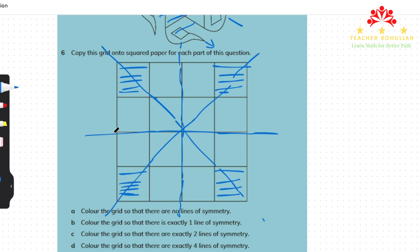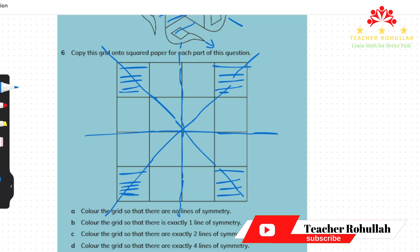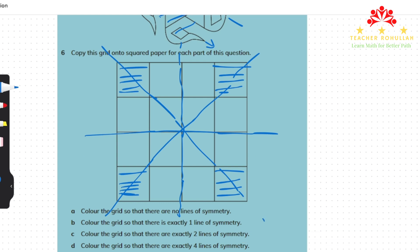This is all about the last part of Unit 2 of Cambridge Primary Mathematics Learners Book 5. I hope it makes sense for you and helps you work with 2D shapes, make patterns with lines of symmetry, and color shapes so that parts are exactly the same. Please subscribe to my channel, like the video, and share it with your friends, classmates, and students if you're a teacher. Have a nice time and thank you so much.